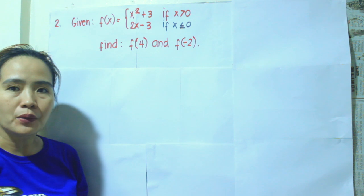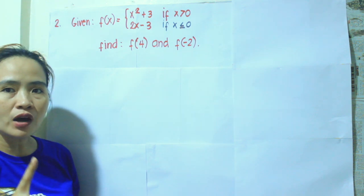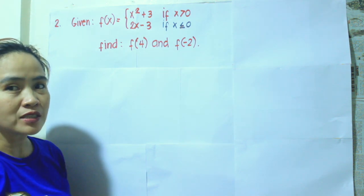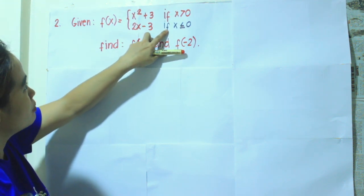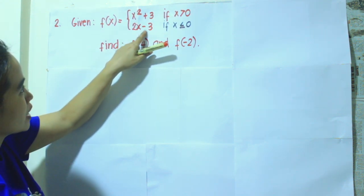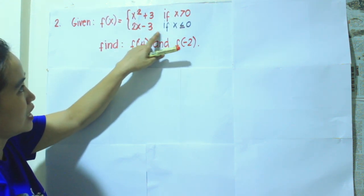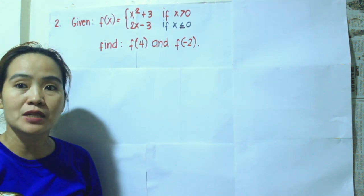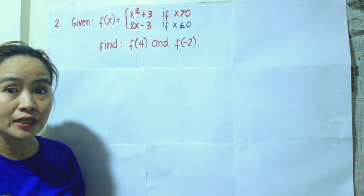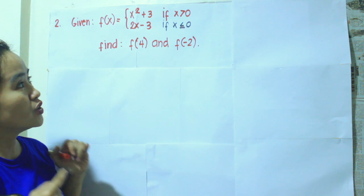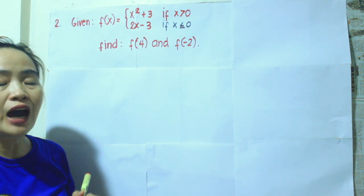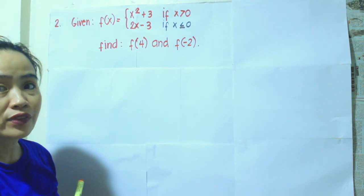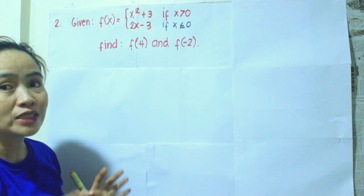The numbers greater than 0 are 1, 2, 3, and all positives. The specified domain for the sub-function 2x minus 3 is x is less than or equal to 0, so 0 is included. Integers less than 0 are negative 1, negative 2, negative 3, and all the negatives.